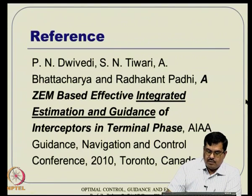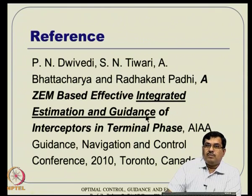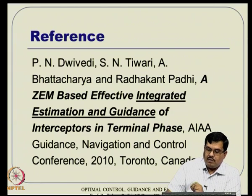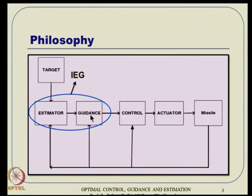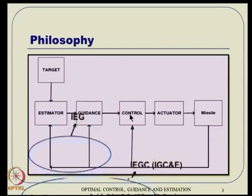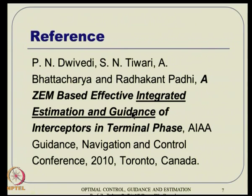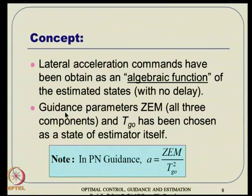The concept is: lateral acceleration commands are obtained as an algebraic function of estimated states, meaning there is no delay. You estimate certain states and then directly compute the lateral acceleration required. This is motivated from PN guidance: lateral acceleration equals N times V_c times lambda-dot. Equivalently, it can be written as Z_m (zero-effort miss) divided by T_go squared. So if you can estimate Z_m and T_go, you directly get the lateral acceleration.